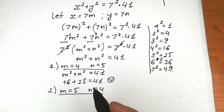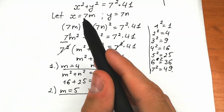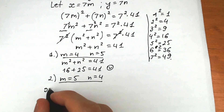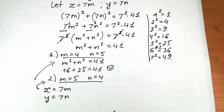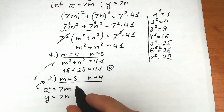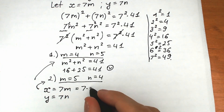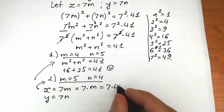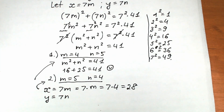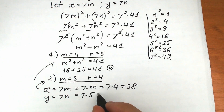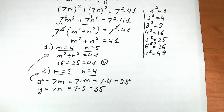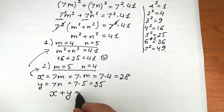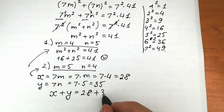Let's go back to our substitution: x = 7m and y = 7n. Using the first interpretation, m = 4 gives x = 7 × 4 = 28, and n = 5 gives y = 7 × 5 = 35. Therefore, x + y = 28 + 35 = 63.